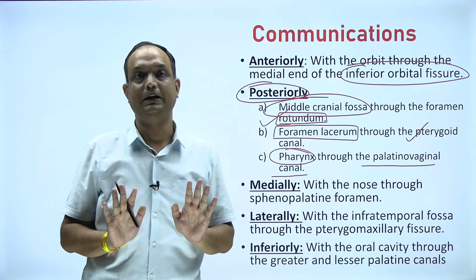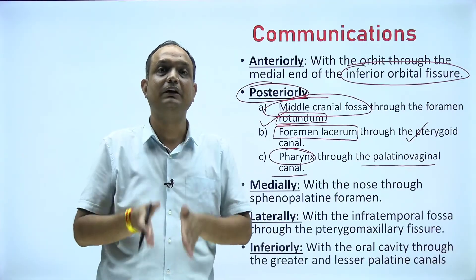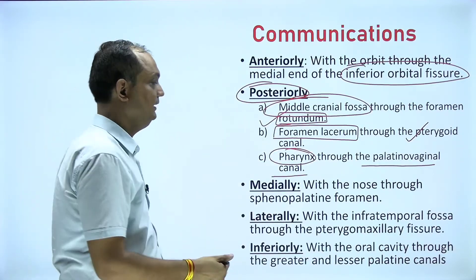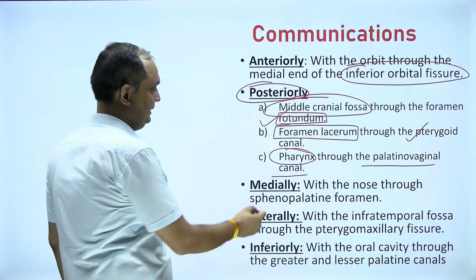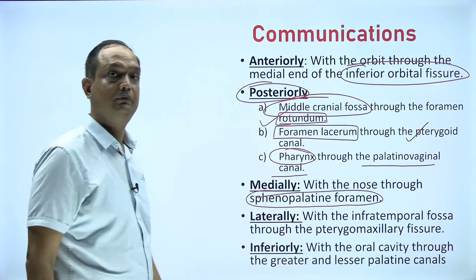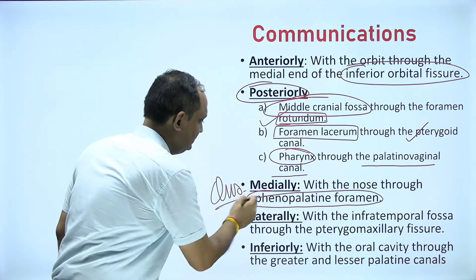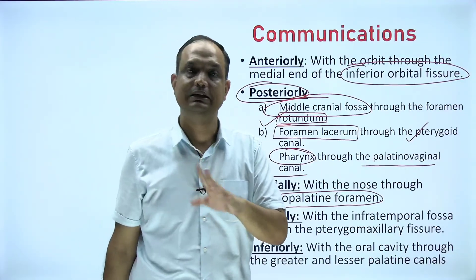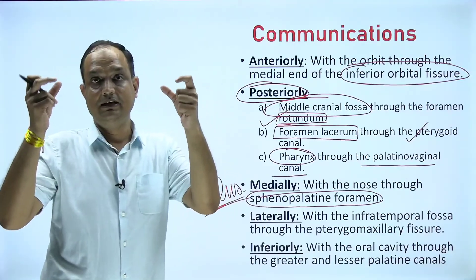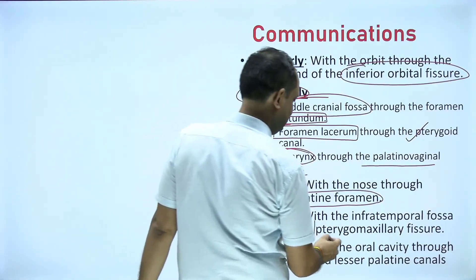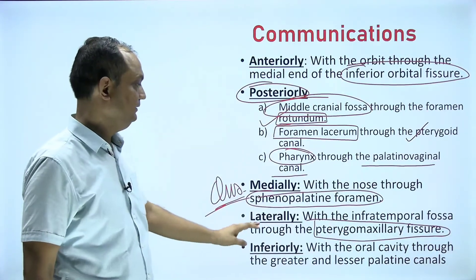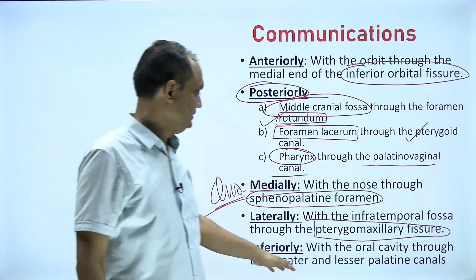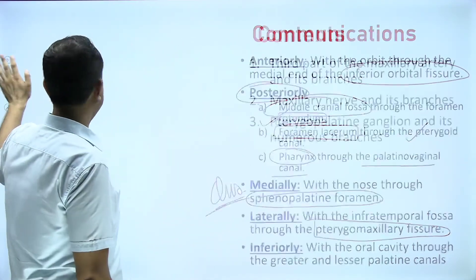Medially, the perpendicular plate of the palatine bone separates it from the nasal cavity. The channel through which structures enter the nasal cavity is known as the sphenopalatine foramen — a commonly examined question: the sphenopalatine foramen is a communication between the pterygopalatine fossa and the nasal cavity. Laterally, the pterygomaxillary fissure communicates it with the infratemporal fossa. Inferiorly, through the pyramidal process, you have tunnels known as the lesser and greater palatine canals.